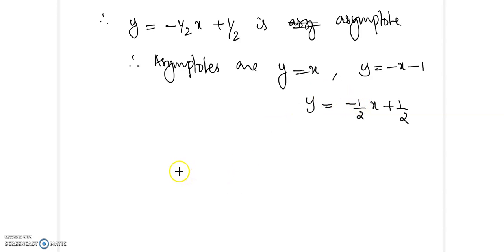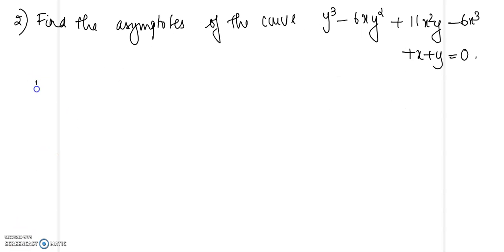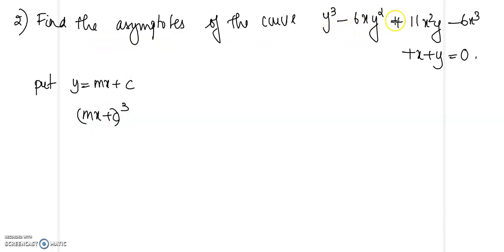So this is how we find the asymptote. Let us look at one more problem. We will put y equal to mx plus t, so we get mx plus t whole cube. The equation is y cubed minus 6xy squared plus 11x squared y minus 6x cubed plus x plus y equal to 0.